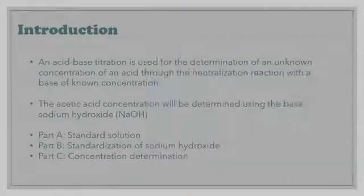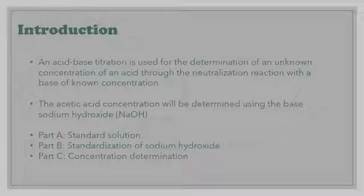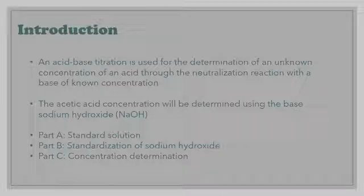Welcome to experiment A1, the determination of the concentration of acetic acid in vinegar. An acid-base titration is used for the determination of an unknown concentration of an acid through the neutralization reaction of a base of known concentration. In this experiment, the concentration of acetic acid in vinegar will be determined using a standardized sodium hydroxide solution.